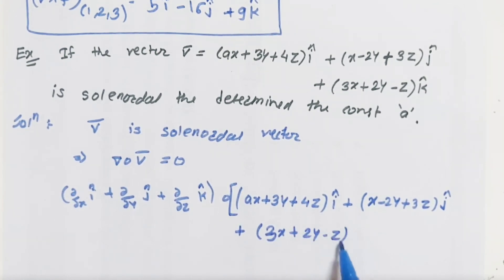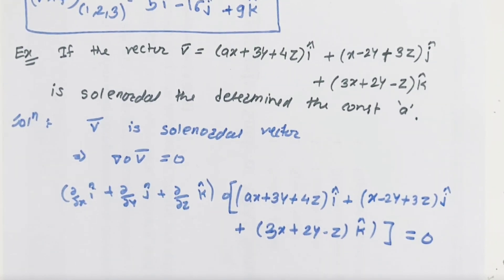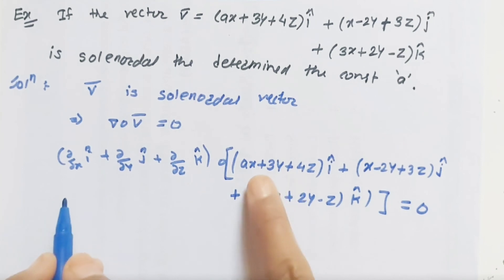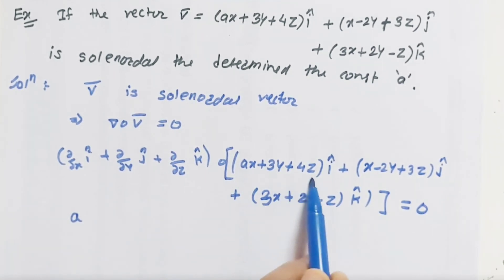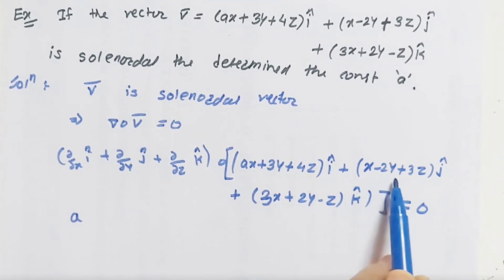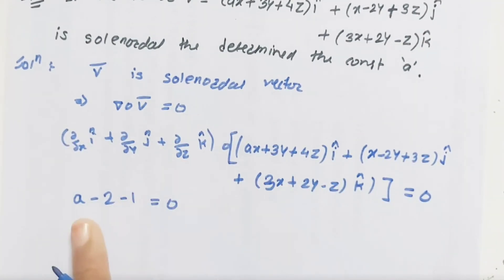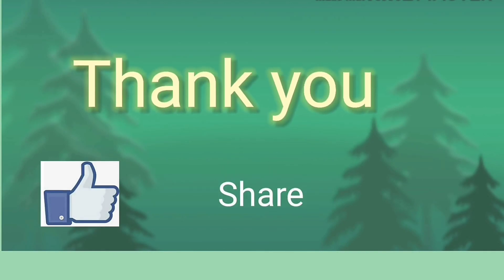Since the given vector is solenoidal, delta dot v-bar equals zero. Taking the dot product: partial derivative of the i-cap coefficient with respect to x gives a; partial derivative of the j-cap coefficient (x minus 2y minus 3z) with respect to y gives minus 2; partial derivative of the k-cap coefficient (3x plus 2y minus z) with respect to z gives minus 1. So a minus 2 minus 1 equals zero, therefore a equals 3.